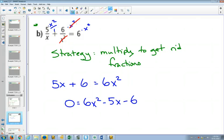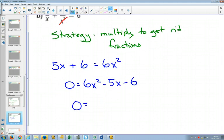You could either subtract 6x squared on both sides or subtract the 5x and the 6. I personally find it's easier to factor if you have the first term positive.